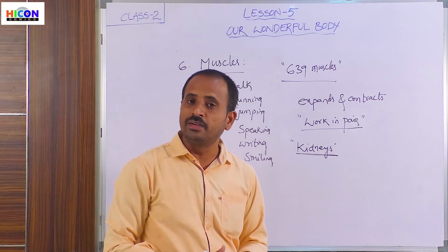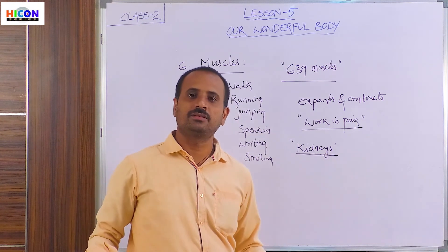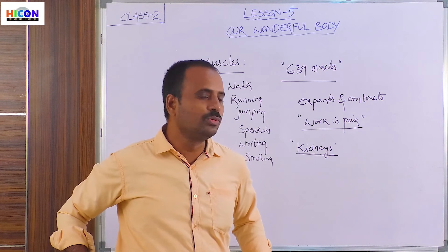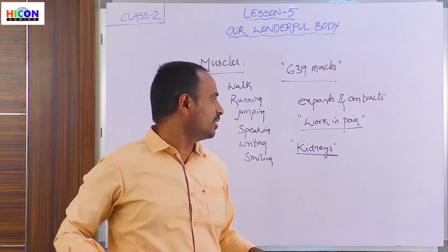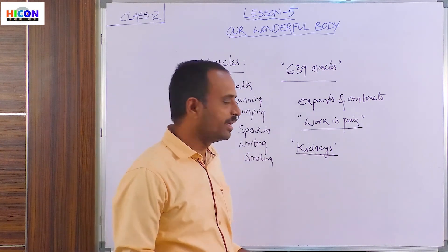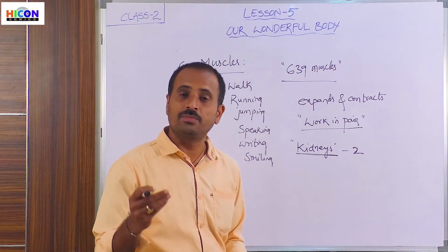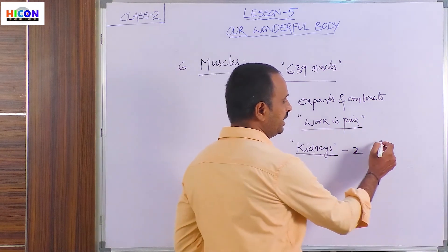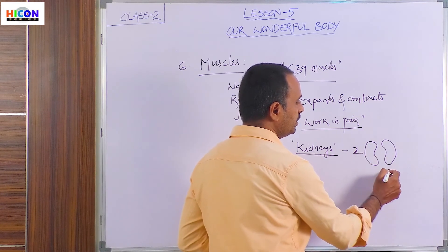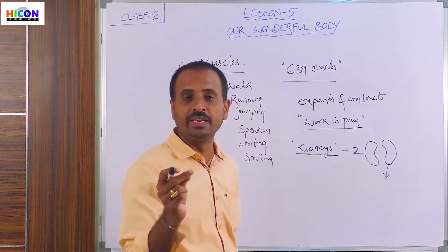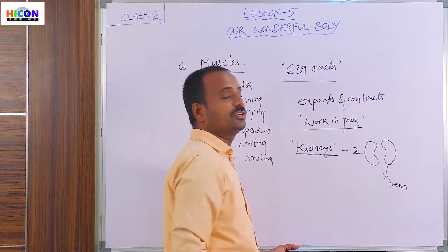Where are the kidneys located? The kidneys are located at the back side, just above our waist. The two kidneys are present at each side of the spinal cord, just above the waist. Every human being has two kidneys. The shape of the kidneys is like a bean — that is why kidneys are present in a bean shape. There are generally two kidneys.